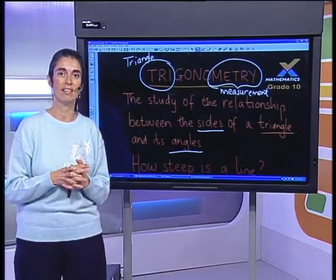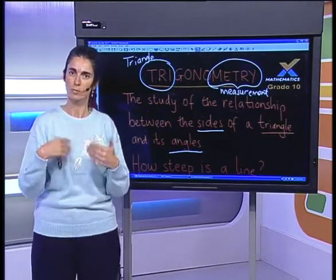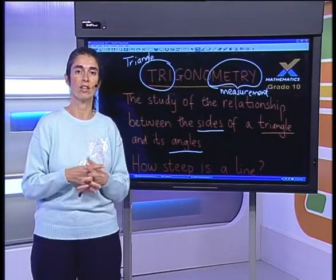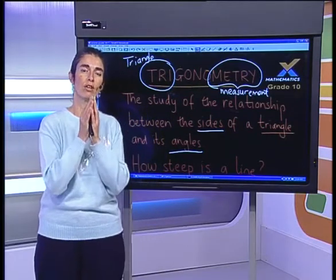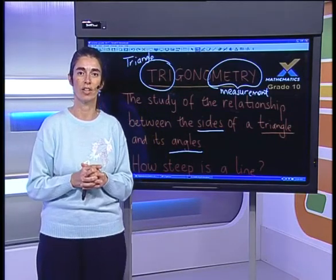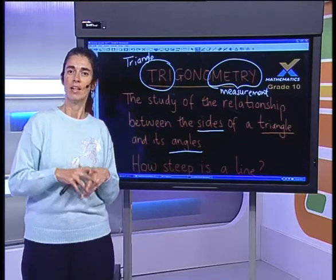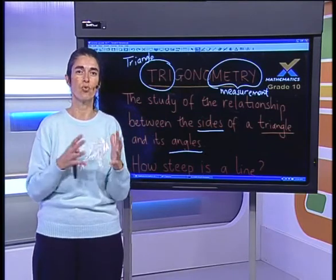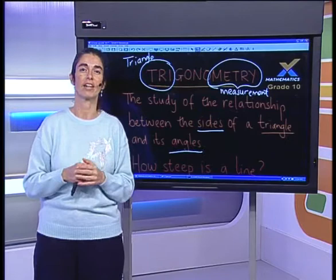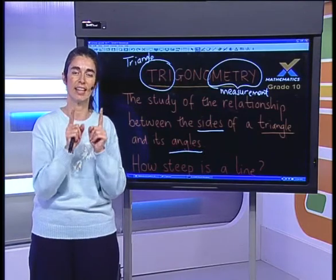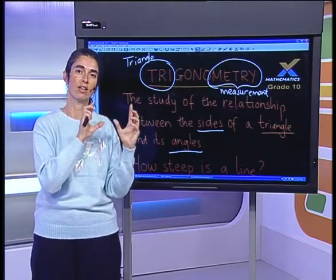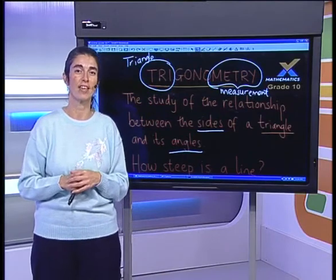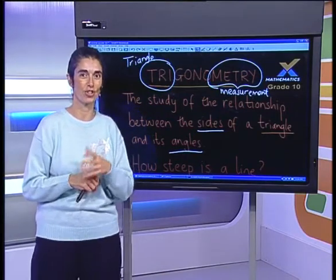We're going to begin in Grade 10 by looking at the right angle triangle. As we move on later into Grade 11, we'll look at other triangle types. But for now, we are going to focus on the basic unit, which is the right angle triangle. Did trigonometry really originate just with triangles, or did it come from somewhere else? I'm going to take you back to the work done on straight lines, because there is a link between trigonometry and algebra.